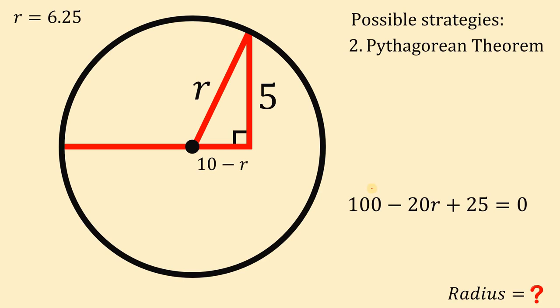Now let's combine similar terms, 100 and 25. If we add 100 to 25, we get 125. Let's add 20R on both sides. So we have 125 equals 20R. Divide both sides by 20. We get that R equals 125 over 20. 125 over 20 equals 6.25. That is the value of R we got earlier.